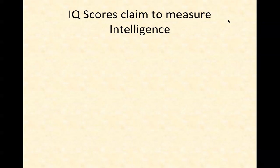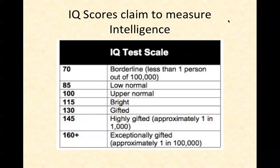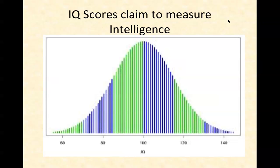IQ scores claim to measure intelligence. If you score 70 or below, you'd be considered borderline; around 85 is below normal; 100 is upper normal; then you go on to bright, gifted, and highly gifted. IQ follows a bell curve — the majority of people fall around 100, with very few at the extremes of 60 or 140. But it's really based on measuring things against each other, and a lot of times it's just measuring effort rather than actual abilities or intelligence.